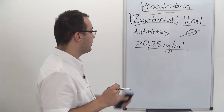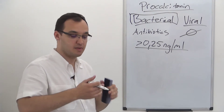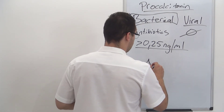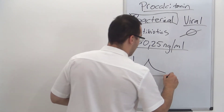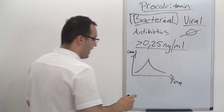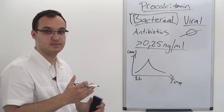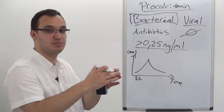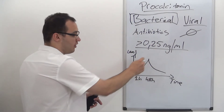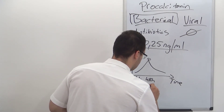Let's look at a typical case with a graph — time on the x-axis and procalcitonin level on the y-axis. The procalcitonin level rises and then decreases. It takes around two hours for the procalcitonin level to be detectable above 0.25. It takes around 48 hours for the level to reach its peak. Then we start antibiotics, and the level will start to decrease.